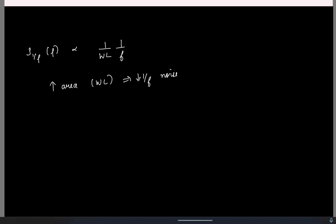Do you know something else which will also reduce if you increase the area? The effect of mismatch, or the offset. Even the effect of mismatch — we saw all the standard deviations were inversely proportional to root W times L. So if you increase the area, the effect of mismatch, or in the case of amplifiers the DC offset, will also reduce.